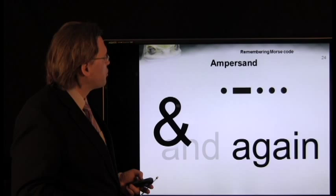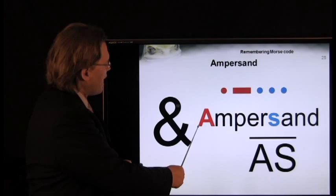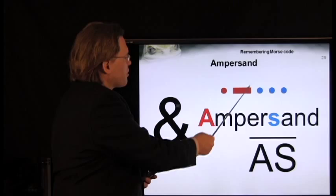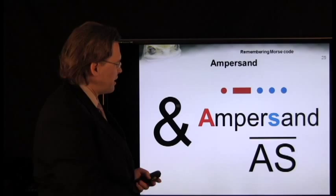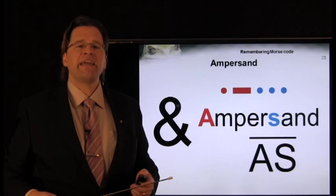For the ampersand, you can remember the word again. Or, alternatively, you can just remember A and S, but run the Morse code for A dot dash together with the Morse code for S, without a significant space between them. This is represented in Morse code pair lengths by putting an overscore above the A and the S together.